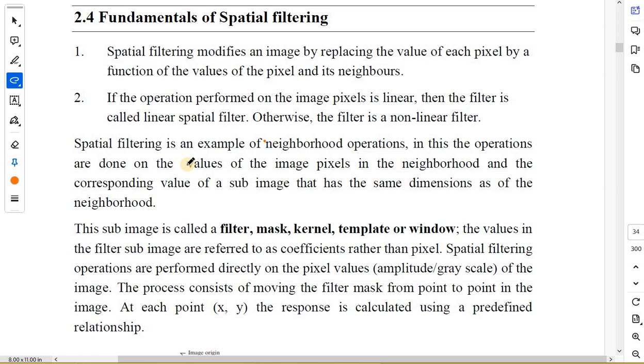What we are going to cover is fundamentals of spatial filtering. When I say spatial filtering, I am talking about calculating the value of every pixel by using the value of the pixel itself as well as its neighbors. Three different types of neighborhoods - n4, n8, and nd - we have already discussed. If the operation I am performing on the image pixel is linear, then the filter is called a linear filter. Otherwise, the filter is called a nonlinear filter. Linear filters give you a straight line, while nonlinear filters give you a curved line.